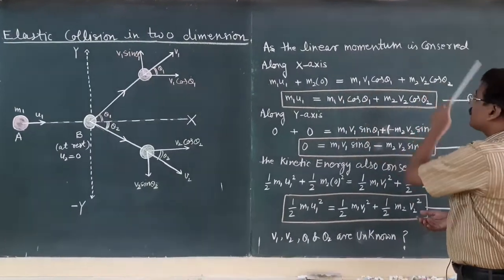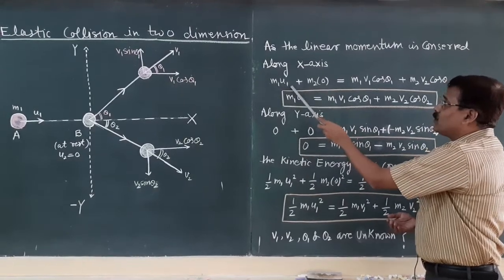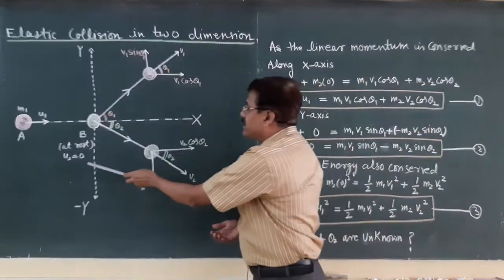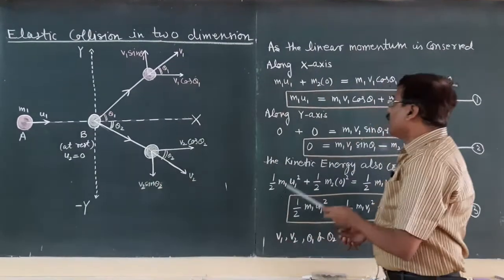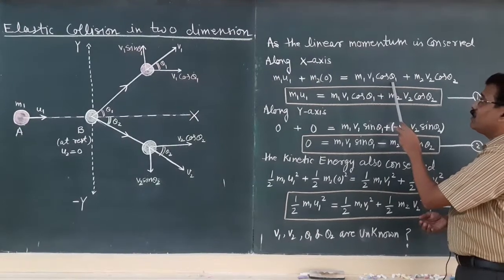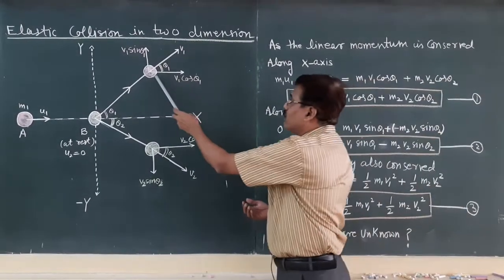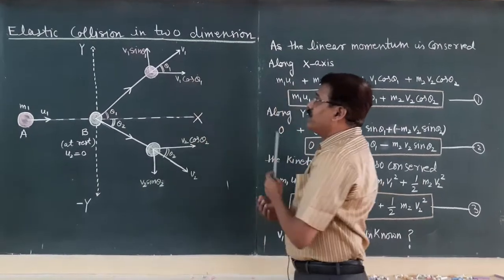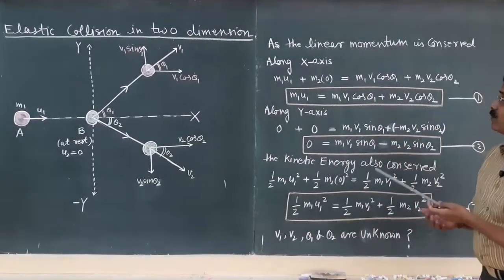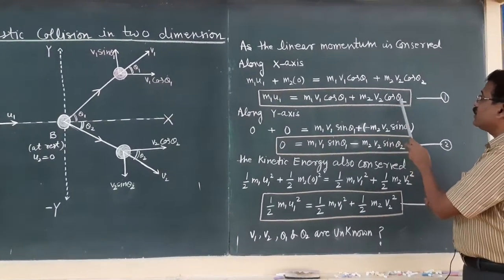The linear momentum is conserved. Along x axis, m1 u1 plus m2 times 0 because the second object is in the rest position. After collision m1 v1 cos theta 1 will be the horizontal component of the momentum of object A. Similarly, the momentum of second object along x axis will be m2 v2 cos theta 2.